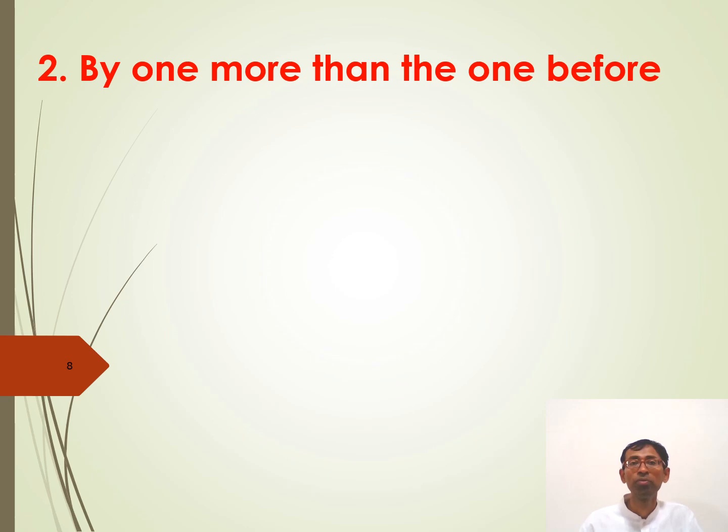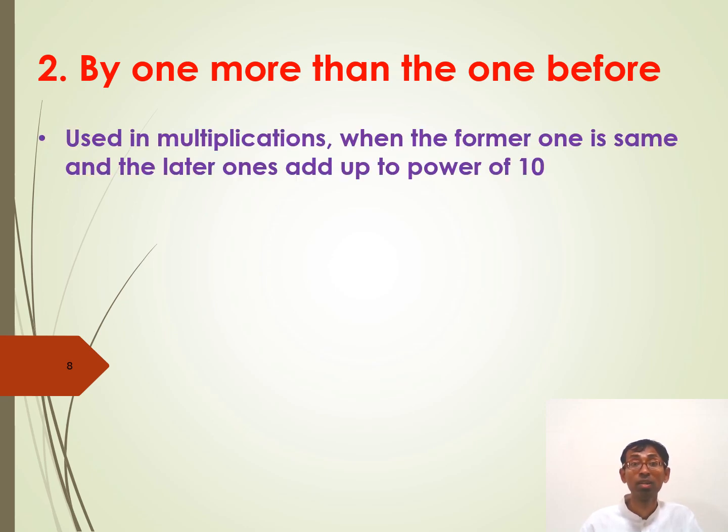By one more than the one before. We will see what it is. Where it is used. This is used in multiplications where the former one is same and the latter ones add up to a power of ten. For example, you have a two-digit multiplication. The former digit is four. That is same. And the latter ones, three and seven, add up to ten. So we can use this sutra to solve this problem.